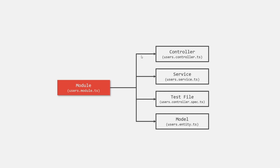A controller file ends with .controller.ts. For example, let's say we are creating a user module, so the file name will be user.module.ts. And for this module, there will be some associated files, and two important files will be the controller file and service file. So for this module, there will be a user.controller.ts file. Remember that the convention is when you create a controller file, it should end with .controller.